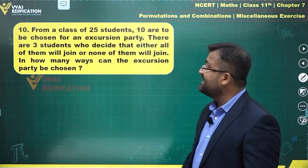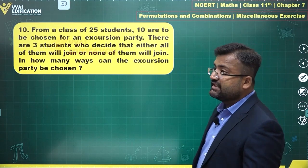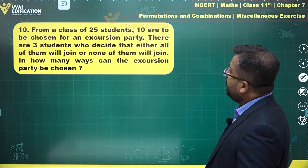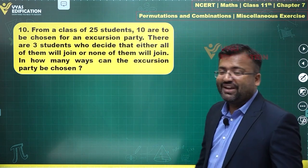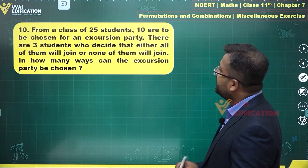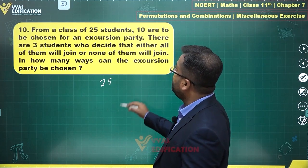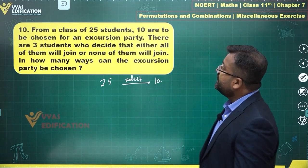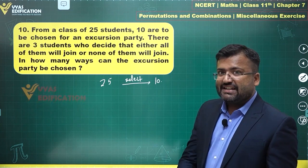Question 10 says: from a class of 25 students, 10 are to be chosen for an excursion party. There are three students who decide that either all of them will join or none of them will join. How many ways can the excursion party be chosen? So from 25 students, we need to select 10, with those three students having this special condition.